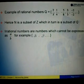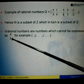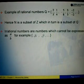Irrational numbers, on the other hand, are numbers which cannot be expressed in the form of A over B. For example, the square root of 3, or square root of 7, and so on.